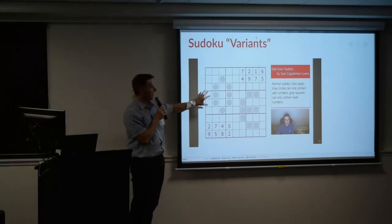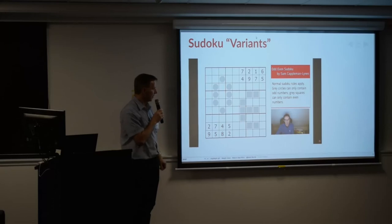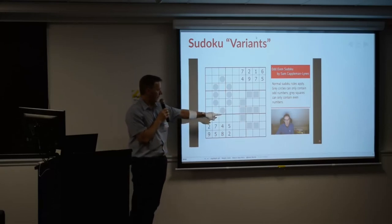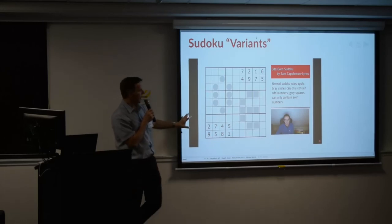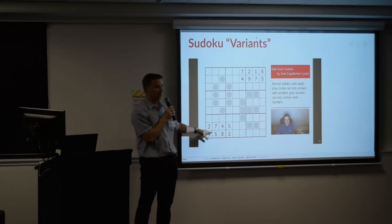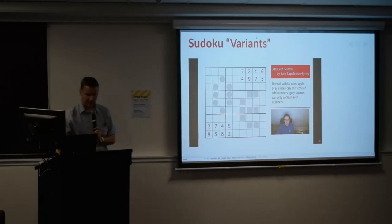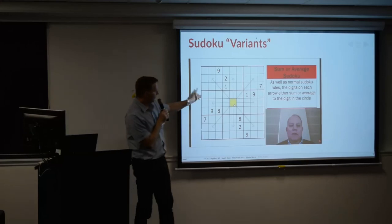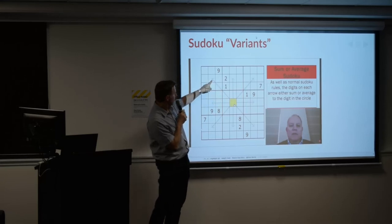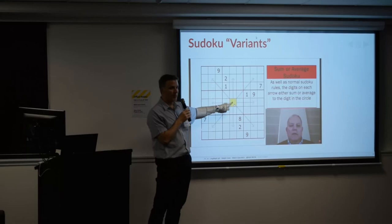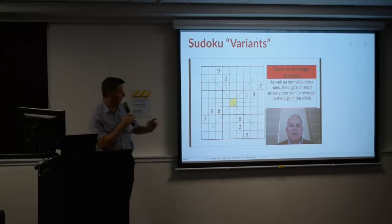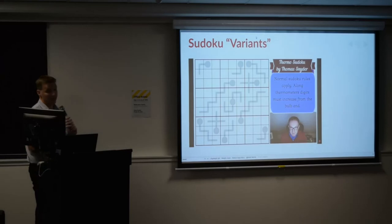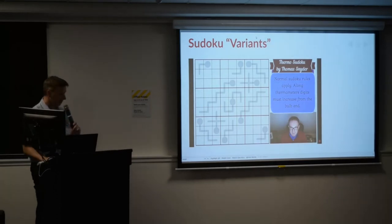They also do Sudoku variants — in this case they've added extra elements where square backgrounds indicate an even number and round ones indicate an odd number, and that allows them to give you fewer starting digits. There are puzzles with arrows where the numbers along the arrow add up to the number in the circle, and they have lots of puzzles with no starting digits at all.